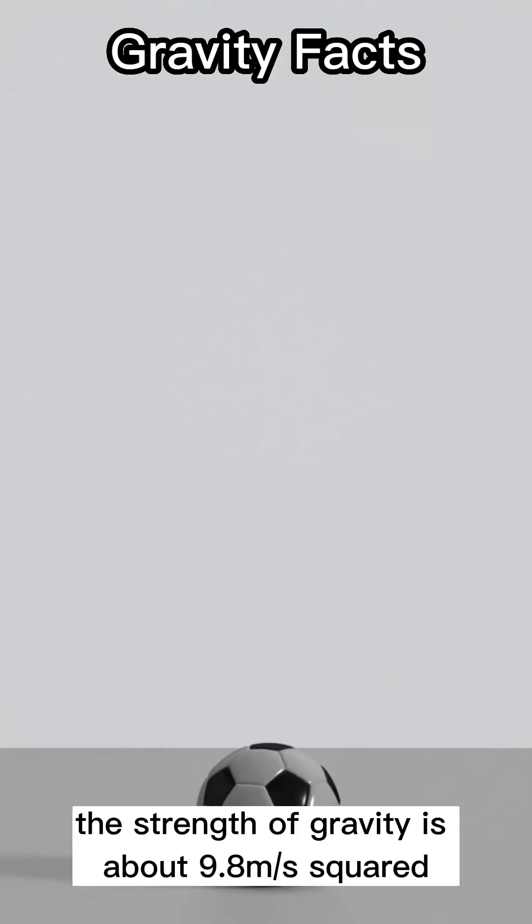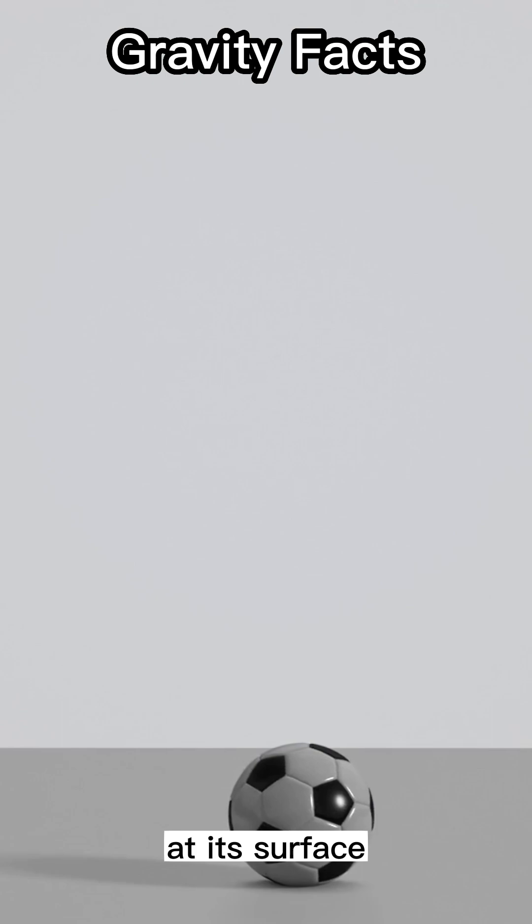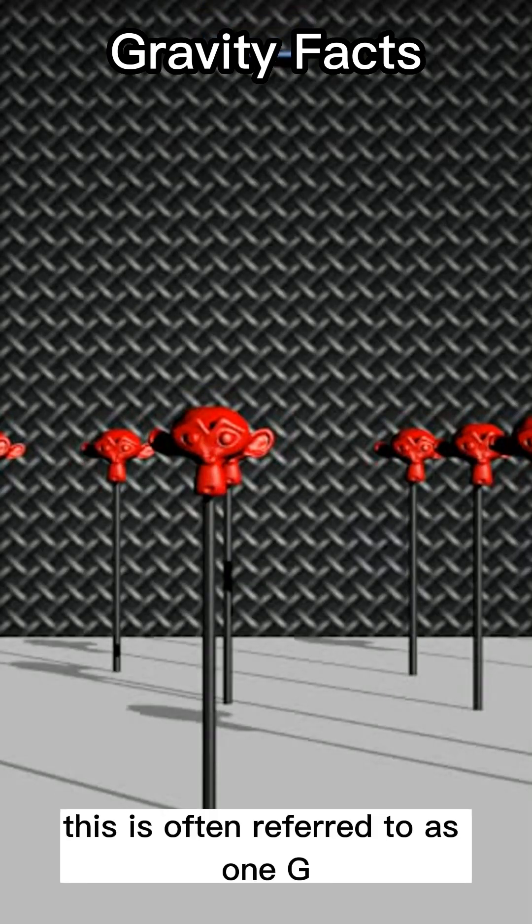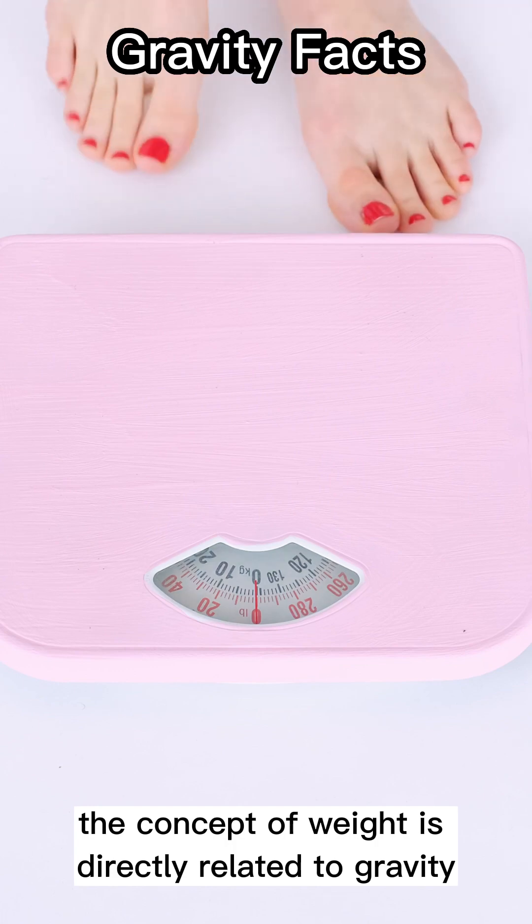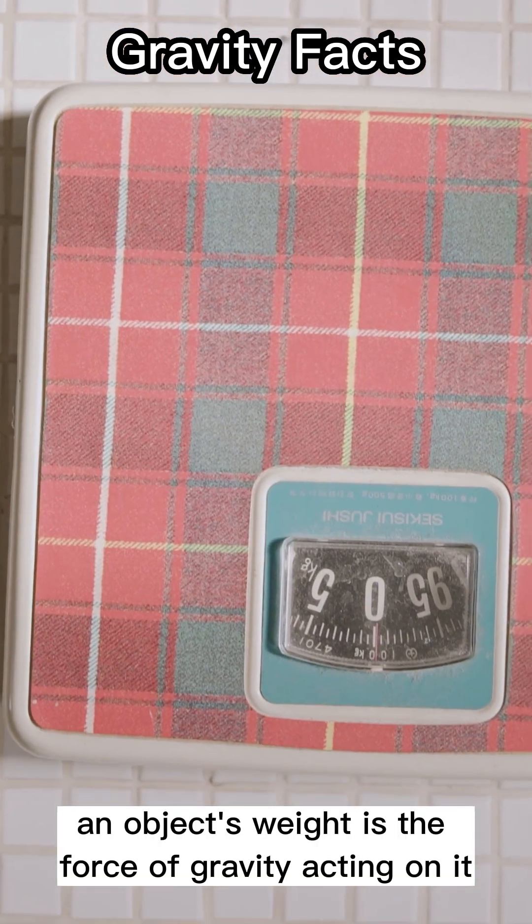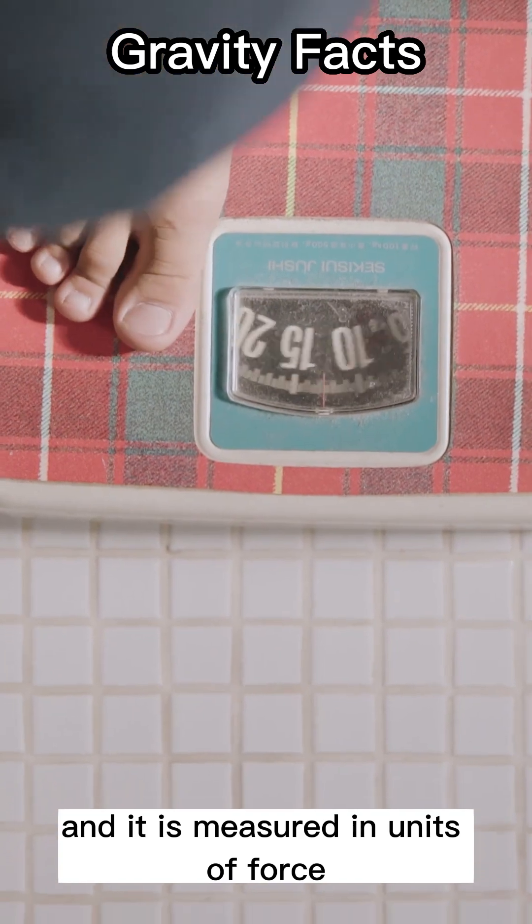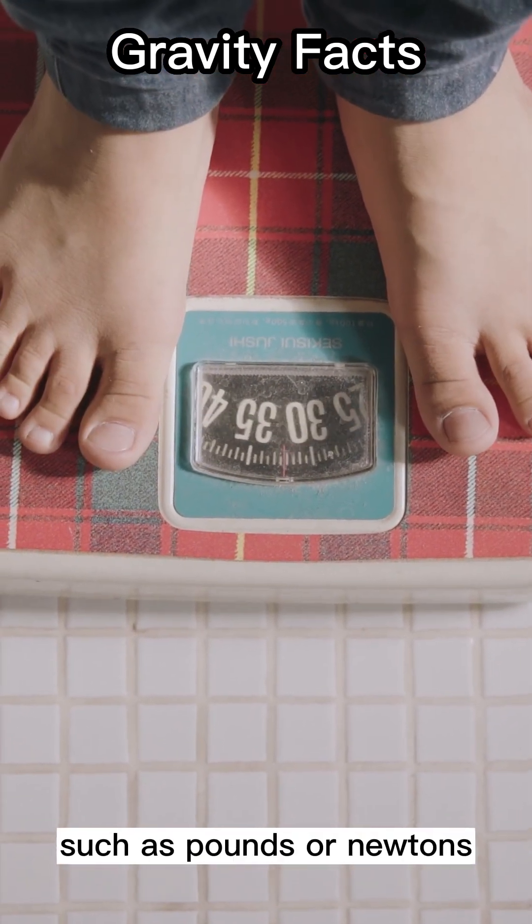The strength of gravity is about 9.8 meters per second squared at its surface. This is often referred to as 1G. The concept of weight is directly related to gravity. An object's weight is the force of gravity acting on it, and it is measured in units of force, such as pounds or newtons.